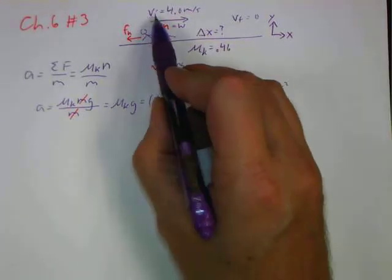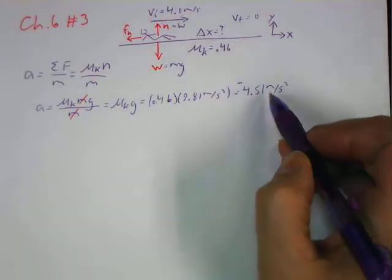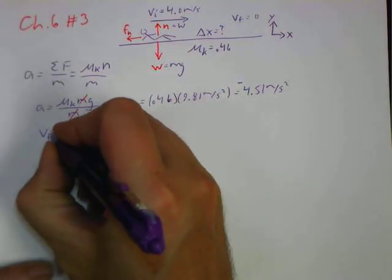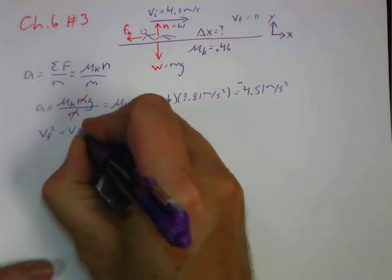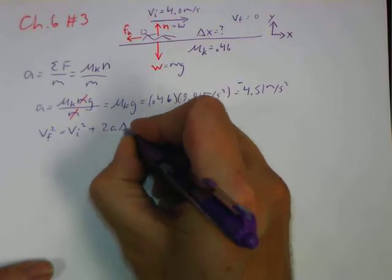We have an initial velocity, a final velocity. We want delta x, and we have an acceleration. That means we're going to use our fourth kinematic equation. v final squared equals v initial squared plus 2 times the acceleration times our displacement.